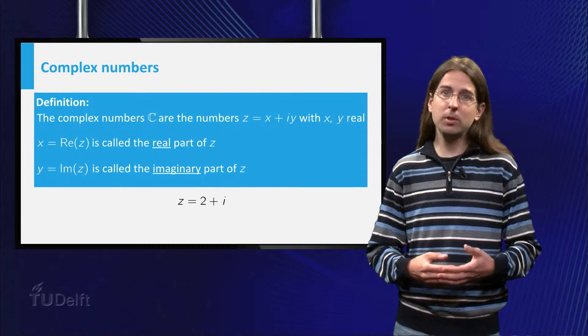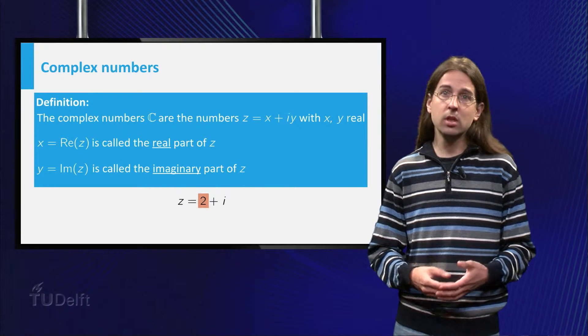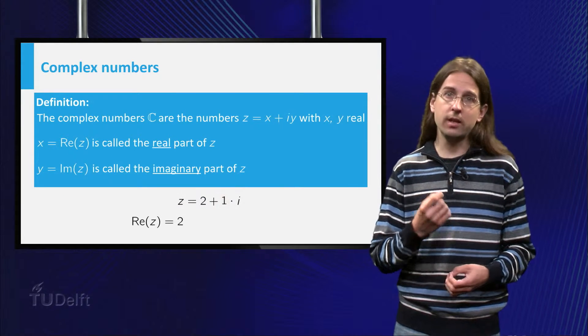For example, 2 plus i is a complex number with real part 2 and imaginary part 1.